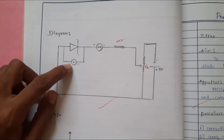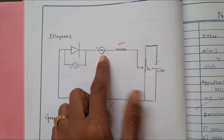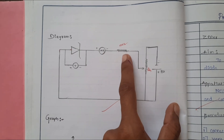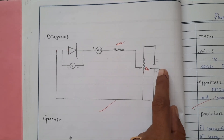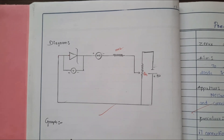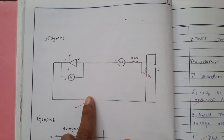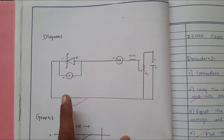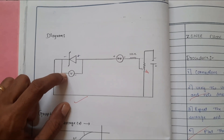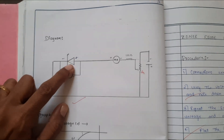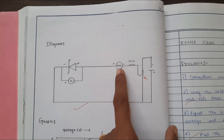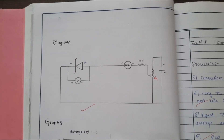Here is the circuit diagram for forward bias. The Zener diode is connected in parallel to the voltmeter, and the common connection is connected to a resistance, then the rheostat, which is connected to the battery. For reverse bias, the Zener diode is still in parallel with the voltmeter but the direction is changed; the remaining connections stay the same.